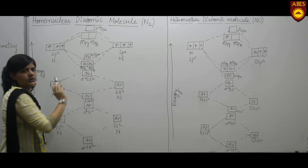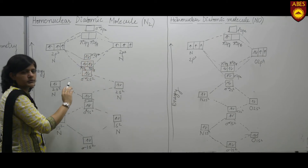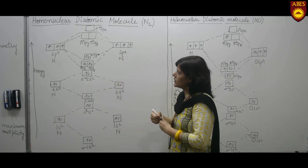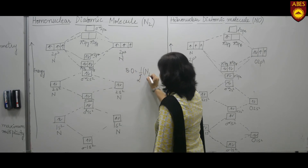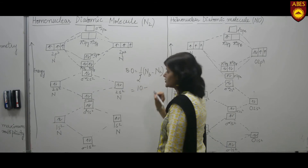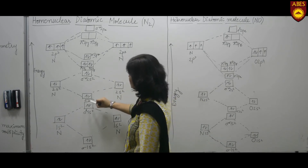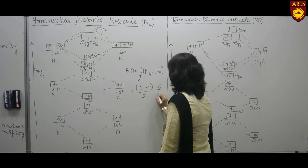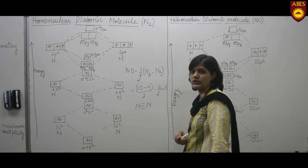Anti-bonding orbitals are empty because all electrons are accommodated in bonding molecular orbitals. This completes the formation of the nitrogen molecule on the basis of molecular orbital theory. Now let's calculate the bond order of the nitrogen molecule. Bond order is half the number of bonding electrons minus anti-bonding electrons. In this diagram, we have 10 bonding electrons and 4 anti-bonding electrons, giving (10−4)/2 = 3, which means nitrogen contains a triple bond: one sigma and two pi bonds.